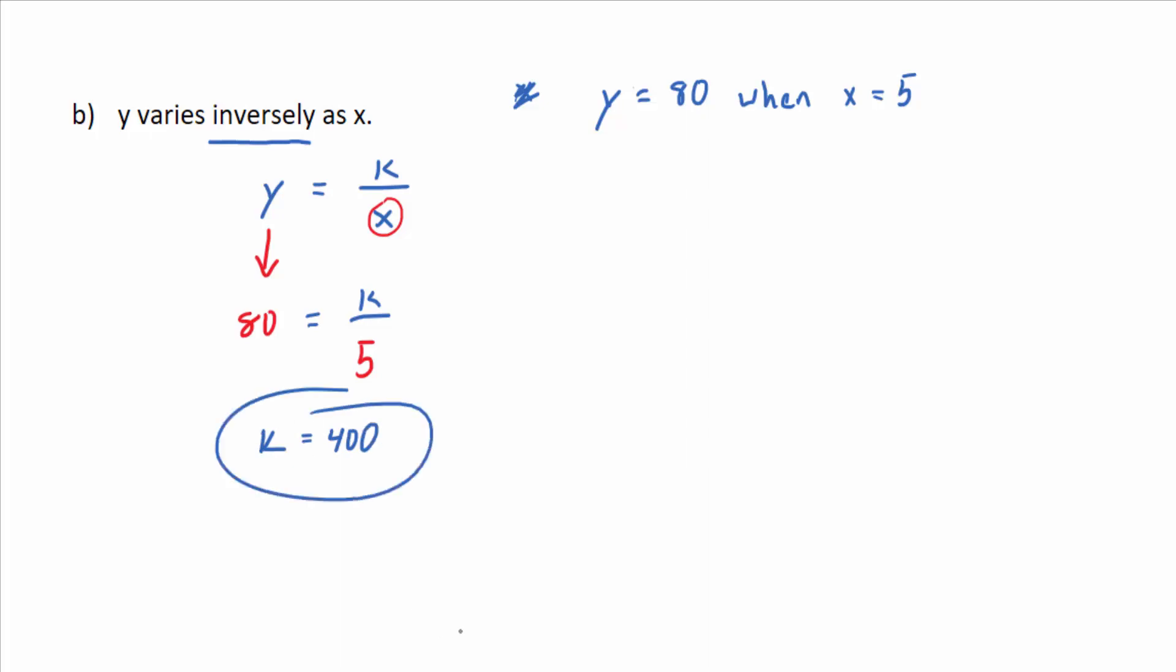So there's your variation constant. What would your variation equation be? So just fill this in. Y equals 400 divided by x. And that really is a rational function or rational equation, isn't it? So that's why this application is included in this section. Because you get fractions basically in your equation.